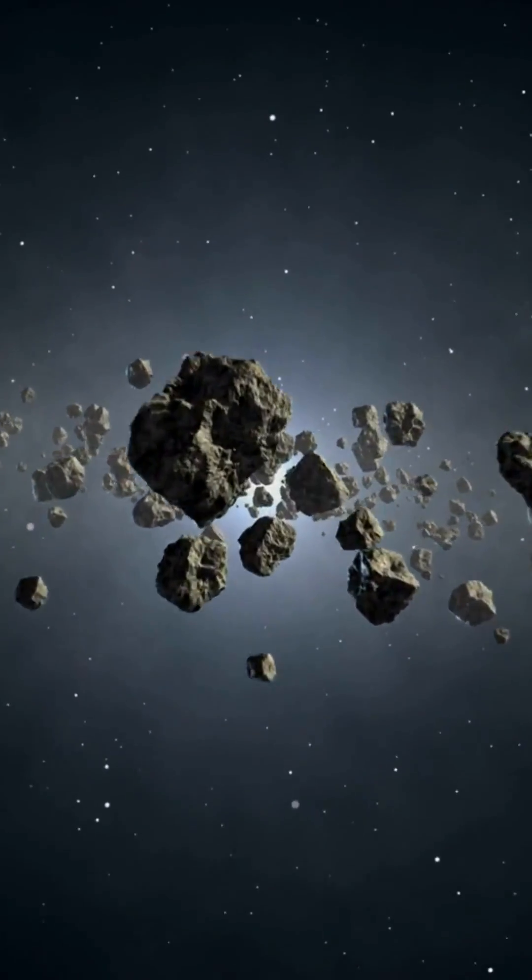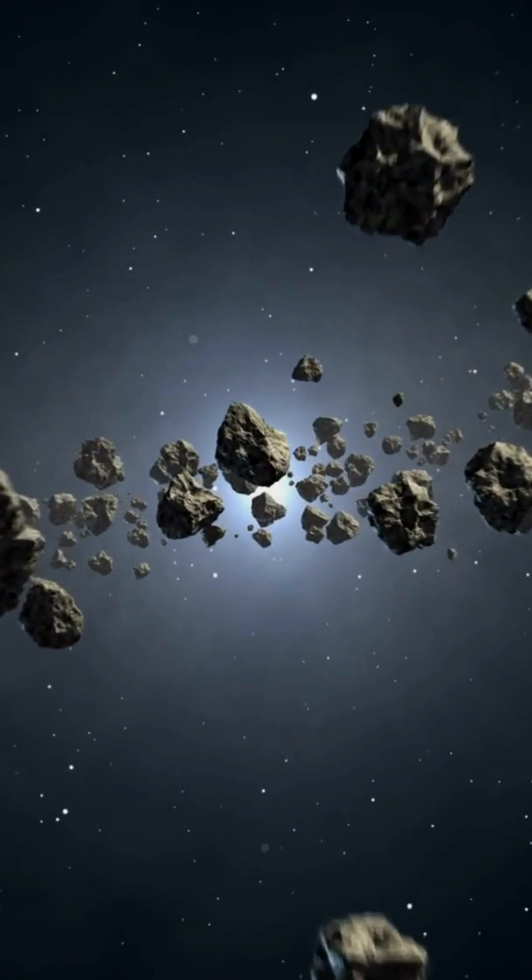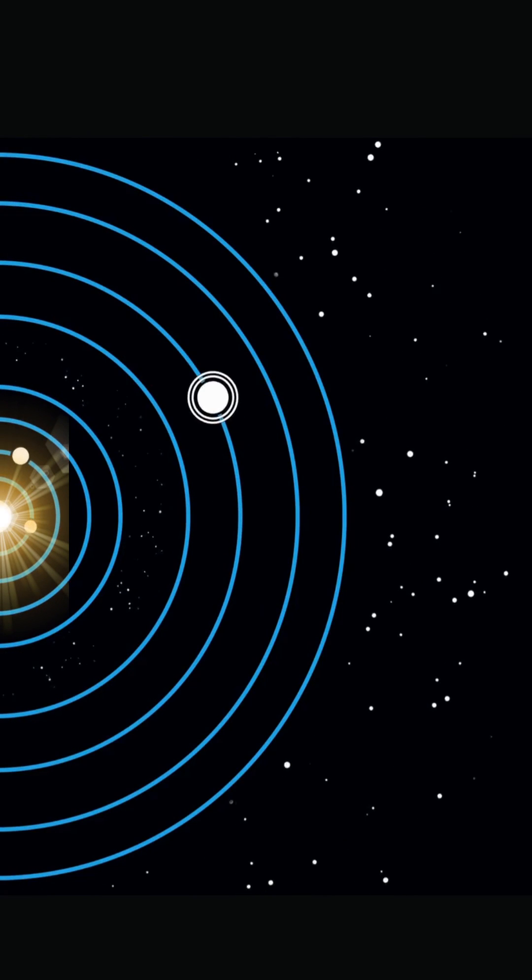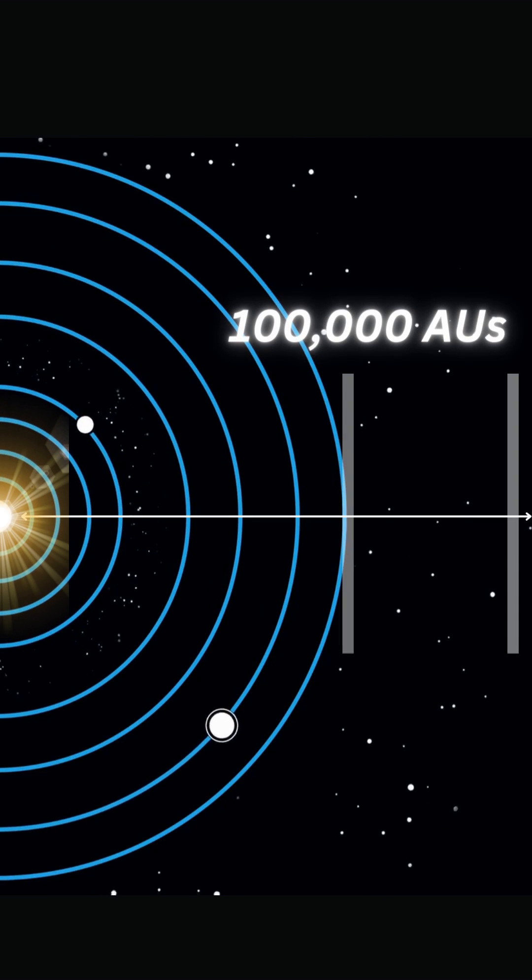What makes the Oort Cloud truly intriguing is its sheer size. It starts about 2,000 times farther from the sun than Neptune, the farthest known planet, and extends for an astonishing distance of up to 100,000 astronomical units.